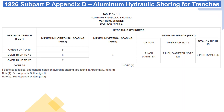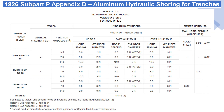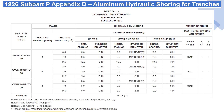See Table D1.1 for Aluminum Hydraulic Shoring, Vertical Shores for Type A Soil. See Table D1.2 for Aluminum Hydraulic Shoring for Vertical Shores for Type B Soil. See Table D1.3 for Aluminum Hydraulic Shoring for Whaler Systems in Type B Soil. See Table D1.4 for Aluminum Hydraulic Shoring for Whaler Systems in Type C Soil.